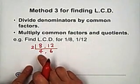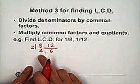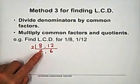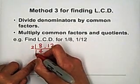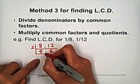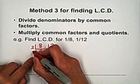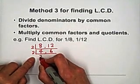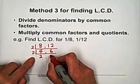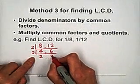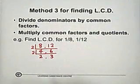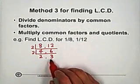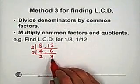After dividing, you can see 4 and 6 still have a common factor of 2. So keep dividing by 2: you get 2 and 3. Now 2 and 3 don't have any common factor anymore.